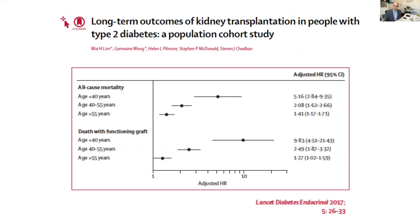We know that other causes of end-stage kidney disease carry more significantly inferior prognosis, and diabetes is the classic example. However, diabetes now causes nearly half of all end-stage kidney disease worldwide. We cannot simply refuse to transplant diabetics in attempting to get better outcomes. What we need to do is factor diabetes in with the other comorbid factors evident in each case and incorporate that into our overall decision about whether to transplant or not.